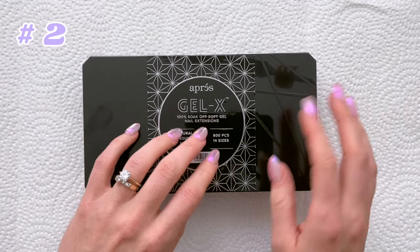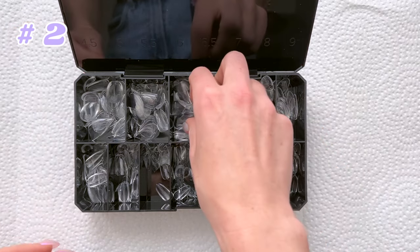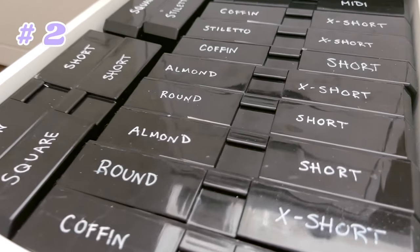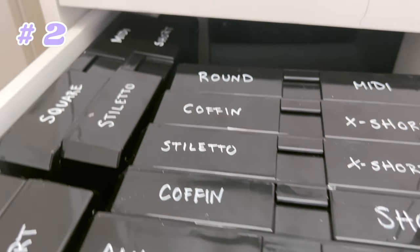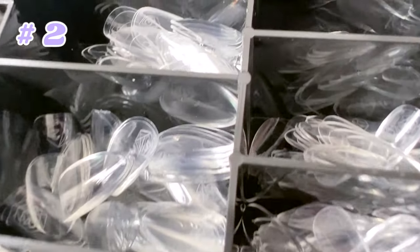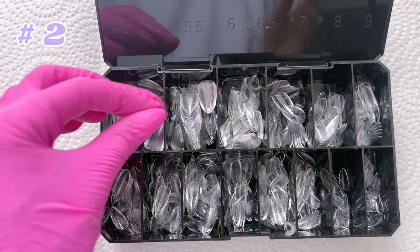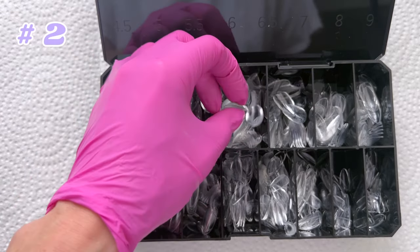Nail tips. The base for any press-on set starts with full cover nail tips. Nail tips come in many different shapes and length combinations, but don't feel like you need to get them all. I suggest considering what shape you like and wear, what do your friends wear, or your potential audience, and then build out from there.